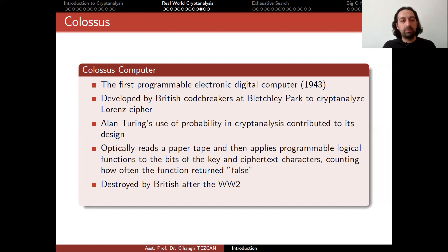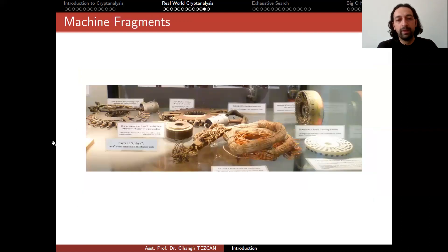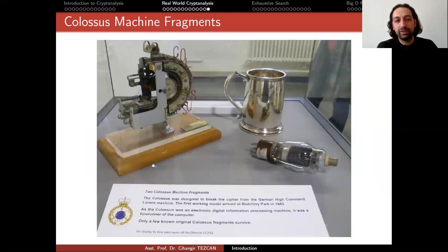People at Bletchley Park asked how to destroy it, and as far as I know, the Prime Minister said that no piece should be bigger than his fist. The good news is it was reconstructed in 2007 and is available at the Bletchley Park museum. I uploaded a video of the reconstructed version to YouTube — it's a huge machine, bigger than most rooms in a building. In the museum you can see original machine fragments, including parts from the Colossus computer; only a few known original Colossus fragments survive. If this pandemic hopefully ends someday, I hope you can visit the museum and see it for yourself.